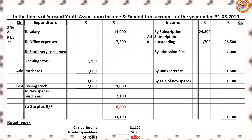Write the heading: In the books of Aircard Youth Association, income and expenditure account for the year ended 31st March 2019. Create expenditure and income side — debit side and credit side. First, enter items under expenditure side by looking at the payment side in the question. All payment items appear under debit side (expenditure side). Salary 14,000 — while writing these expenses, look at the adjustment to check if any adjustment is given related to this item.